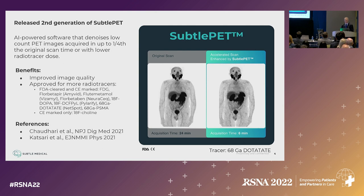The benefits include improved image quality. When this was first approved, it covered a small list of radiotracers, but that list has increased over time as PET continues to adopt new tracers. I would highlight the ability to use gallium-68 studies such as dotatate and PSMA, which are increasing in use at many hospitals. Some references to prospective studies are noted below.